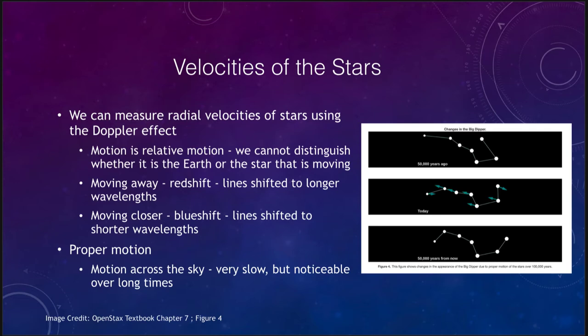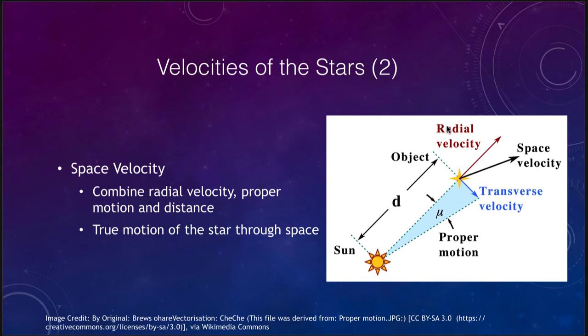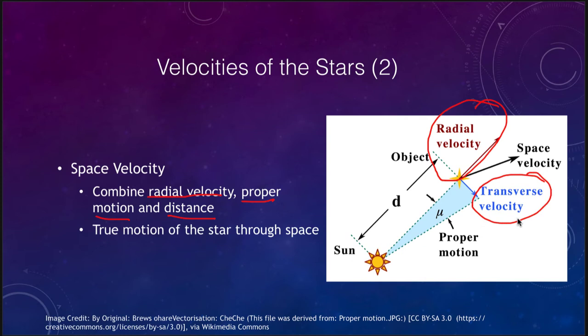In order to find the true velocity of a star, we need to measure both radial and transverse velocity — both are important and must be measured by different methods. If we combine the radial velocity, the proper motion, and the distance, we can figure out the true motion or space velocity of the star. The radial velocity, whether towards or away from us, is measured by the Doppler effect. The transverse velocity is measured by proper motion combined with distance, and adding the two together gives us the true space velocity.